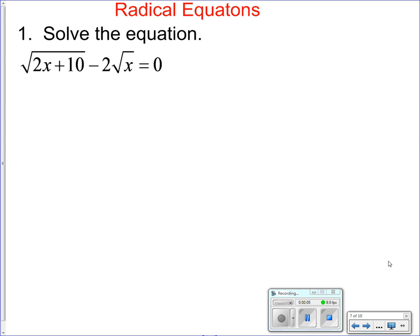Today we're going to be solving radical equations. Our first example has two radicals, but on one side of the equal sign it's zero. The best thing to do is to add this radical to both sides, so I have √(2x+10) = 2√x. To get rid of a radical, you have to square both sides.